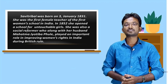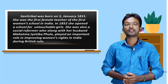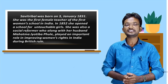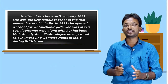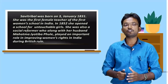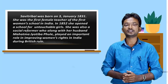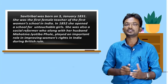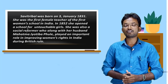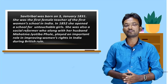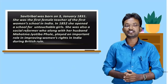Savitribai Phule was born on 3rd January 1831. She was the first female teacher of the first women's school in India. In 1852, she opened a school for untouchable girls. She was also a social reformer who, along with her husband Mahatma Jyotiba Phule, played an important role in improving women's rights in India during British rule.